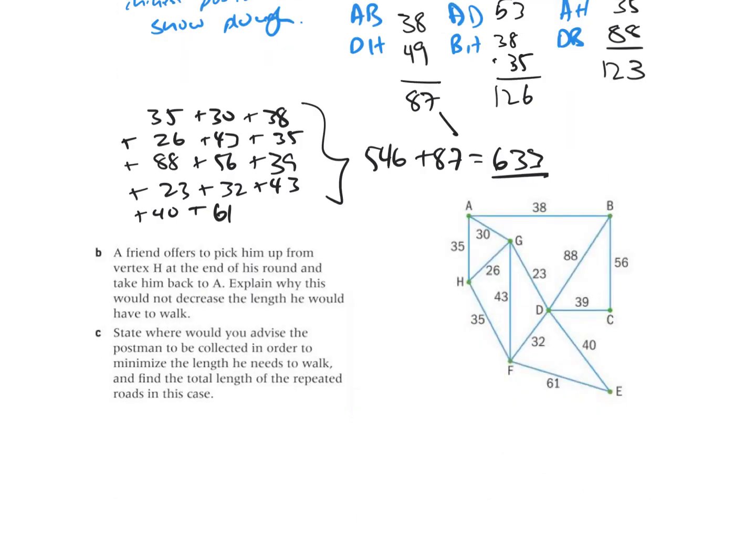Before I only had to add 87, and so it doesn't actually decrease my length, it actually increases it by one. Finally, the state where you would advise a postman to be collected in order to minimize the length he needs to walk and find the total length of the repeated roads in this case.